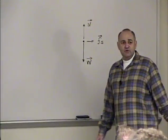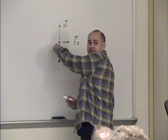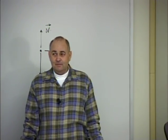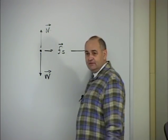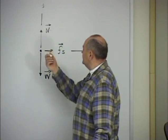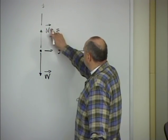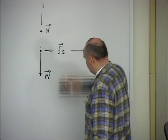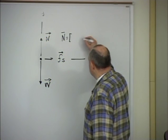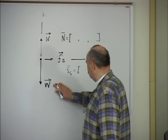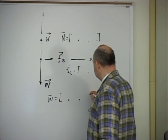What is the z component of the normal force? Zero. X component? Zero. So I will just write NY for the y component. For the frictional force, the y and z components are zero, and the x component is FSX. For weight, two components are zero, and the y component relates to my mass. So the y component of weight is negative mg — negative two thousand newtons if my weight is about two thousand newtons.